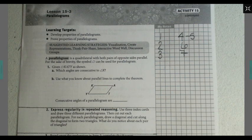Given parallelogram K-A-T-Y as shown, which angles are consecutive to angle K? Use what you know about parallel lines and complete the theorem. Consecutive angles of a parallelogram are blank.